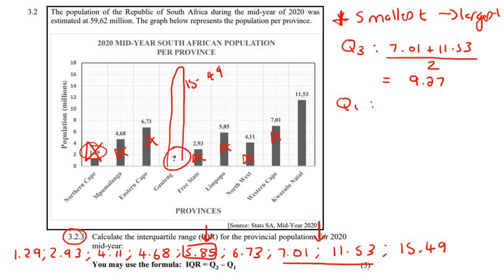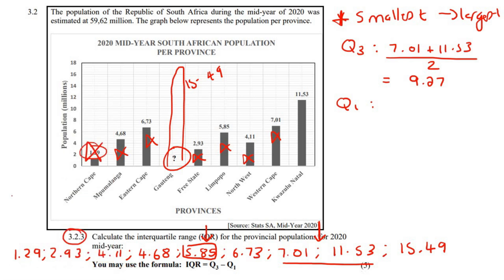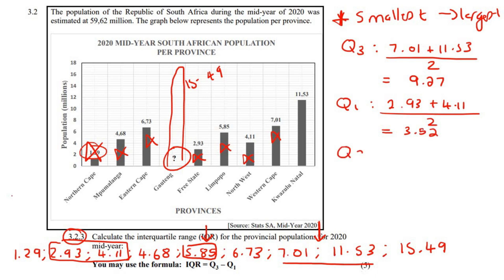To find Q1, it is the middle of the lower half. What is the middle of those four numbers? It falls between two values, so you add those two numbers together and divide by two. That gives Q1 as 3.52. Now we can use our formula: Q3 minus Q1, which is 9.27 take away 3.52, and that gives 5.75.